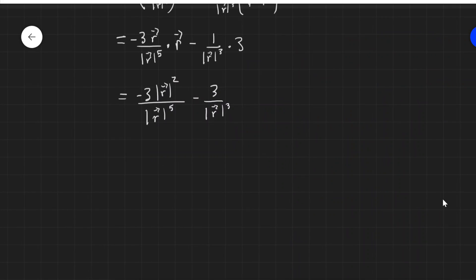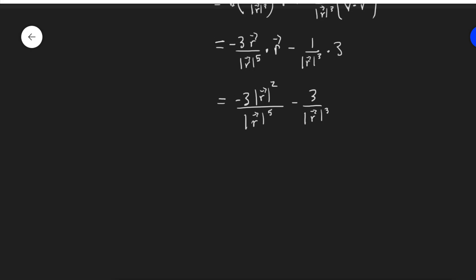Simplifying on the left here, oh, it looks like, oh no, I still have some room. I have magnitude R squared over magnitude R to the fifth. That's R to the third on the bottom. So minus three over magnitude R cubed, minus three over magnitude R cubed.